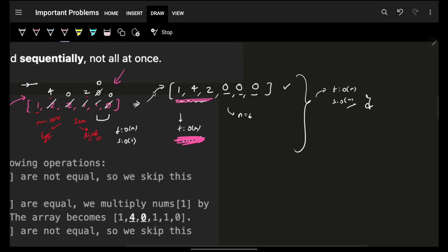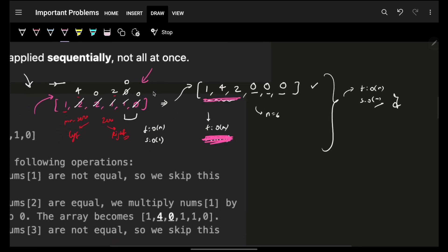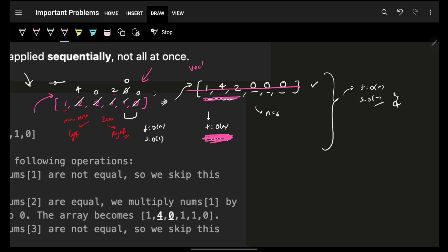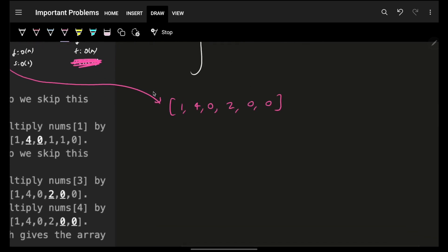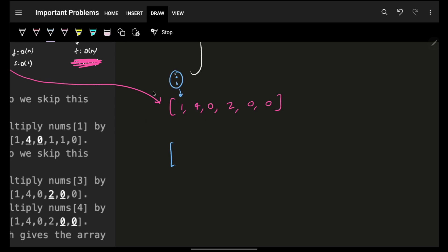Can we get rid of the extra space? Time is still O(n), but can we avoid the new vector? After operations, our array has become [1, 4, 0, 2, 0, 0]. We just need to get all non-zero values to the left. We can use a right index pointer. We iterate over the array and place each non-zero value at the right index position.